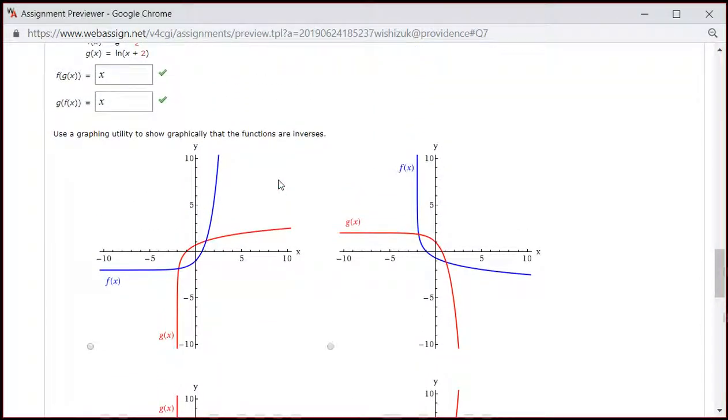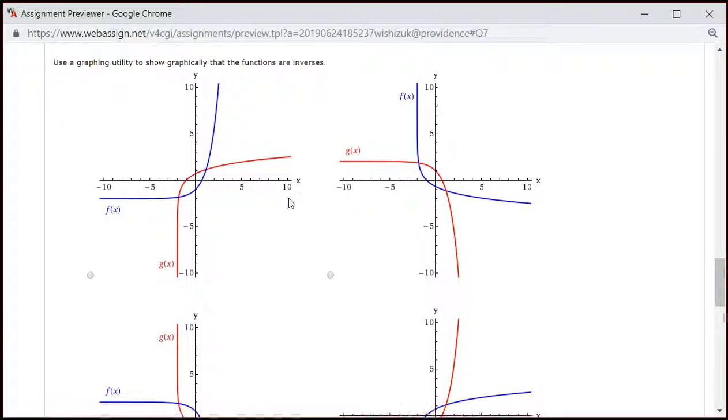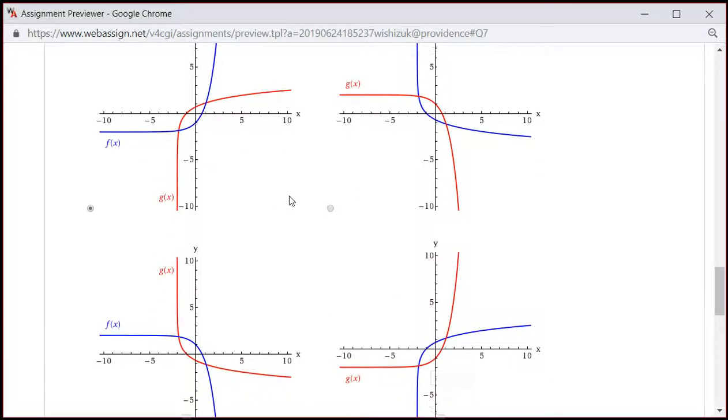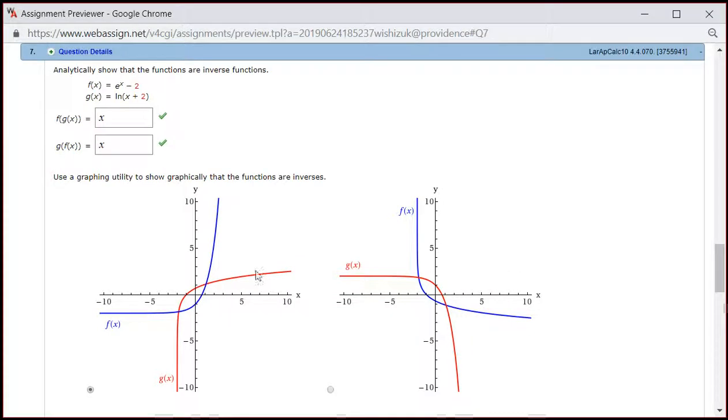All right, so you have f of x, actually, actually, the red one is going through here. So this is the only reasonable picture. And if you look at the g of x,